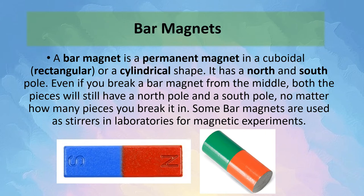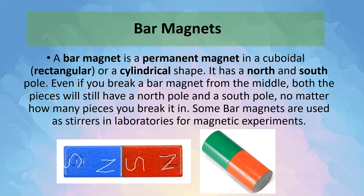Let's look at different types of artificial magnets. First, let's look at a bar magnet. A bar magnet is a permanent magnet in a cuboidal or a cylindrical shape. It has a north and a south pole, and even if you break a bar magnet from the middle, both pieces will still have a north and south pole — this stays the same no matter how many pieces you break it into. For example, if I cut this bar magnet in half, this will still remain the north pole and this part will become the south pole, and this will be the north pole and this will be the south pole. Some bar magnets are used as stirrers in laboratories for magnetic experiments. When bar magnets are freely suspended, the north of the bar magnet points close to the geographic north of the earth.